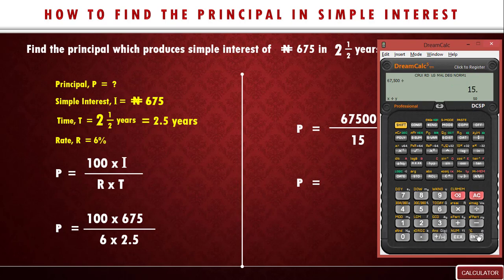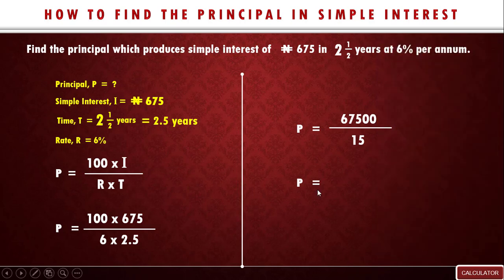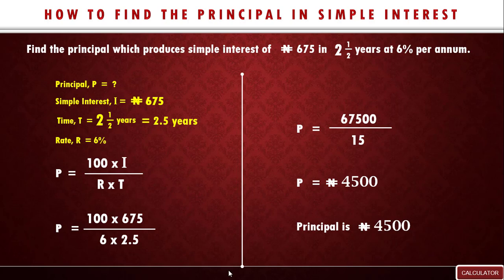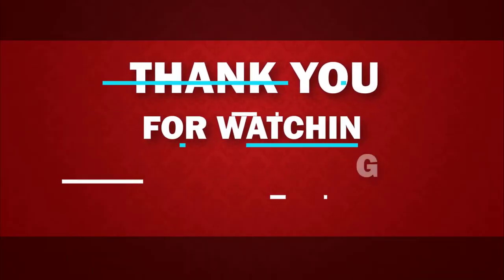So our principal is 4,500 naira. The final answer for principal is 4,500 naira.